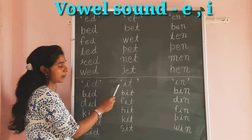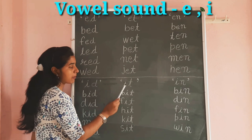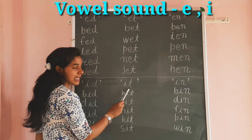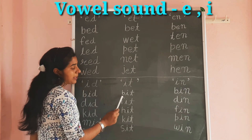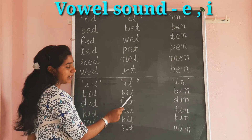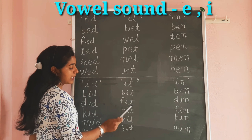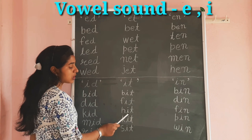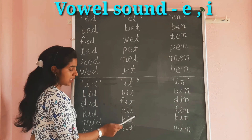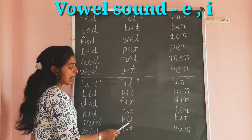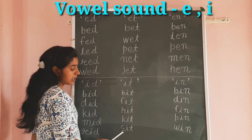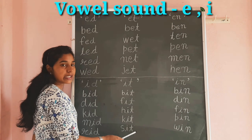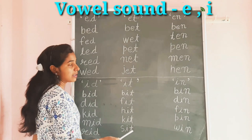Next we make words with the help of I-T: B-I-T, Bit. F-I-T, Fit. H-I-T, Hit. K-I-T, Kit. S-I-T, Sit.